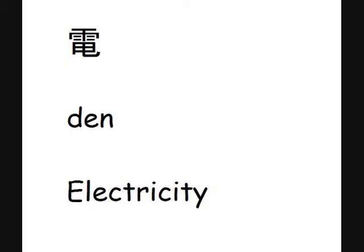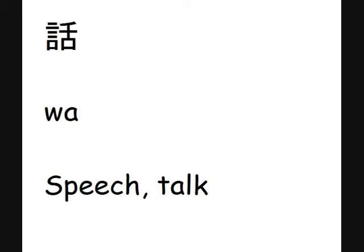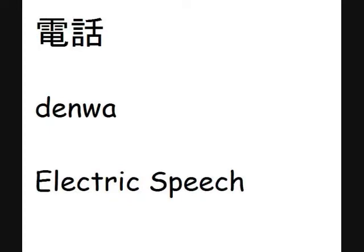Another example: this kanji here means electricity and it's pronounced 'den.' The next kanji is the kanji for speak, or talk, or sometimes story — and it is sometimes pronounced 'wa.' So you have electricity and speech, put them together, you make 'denwa' — electric talking, better known as telephone.